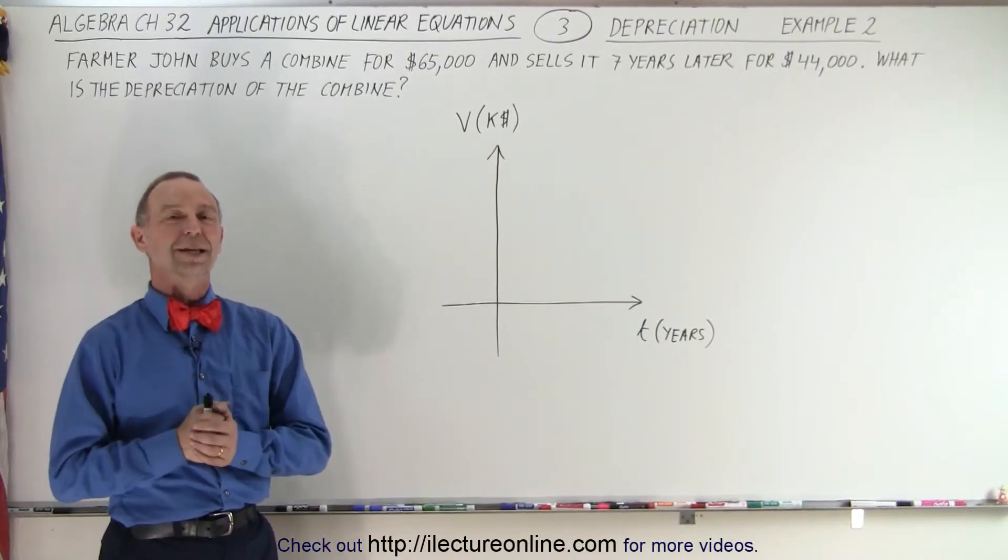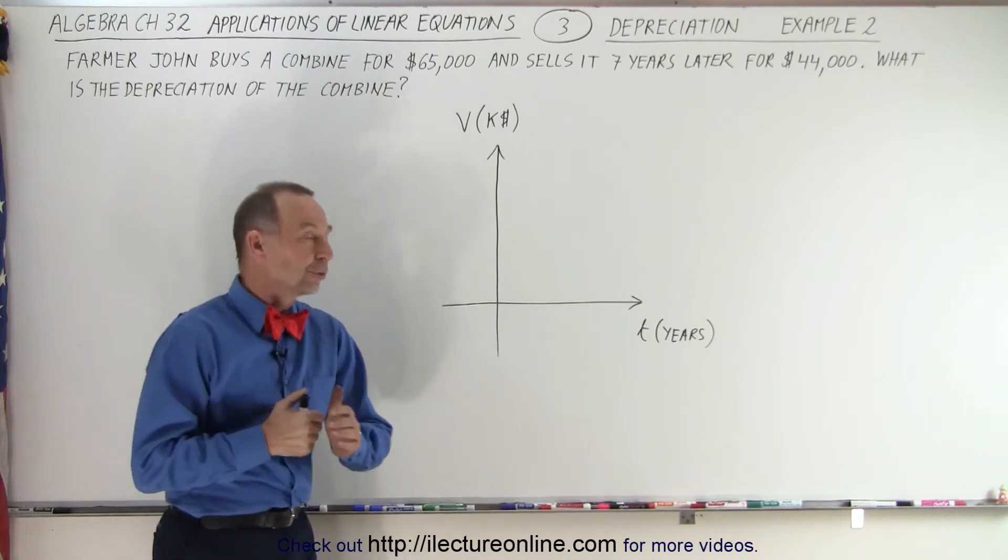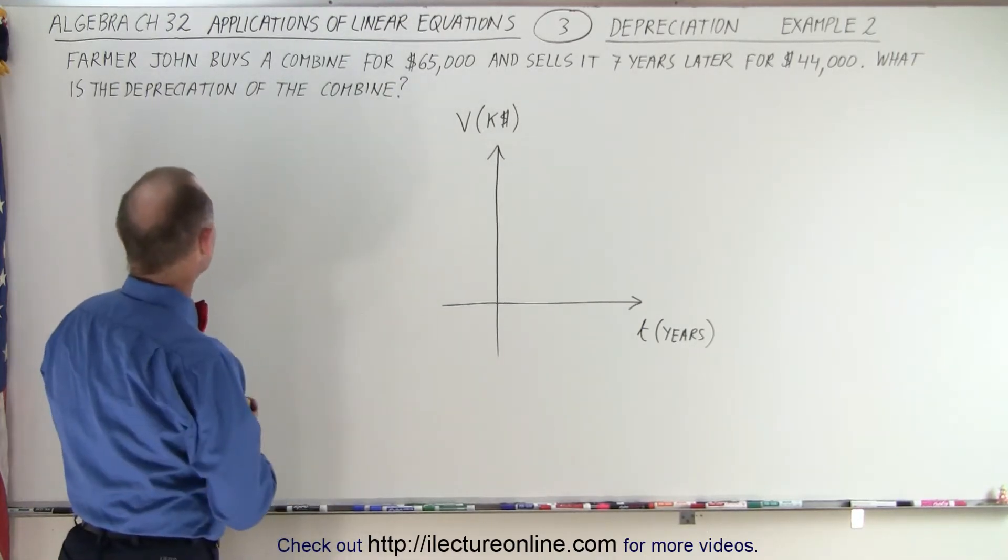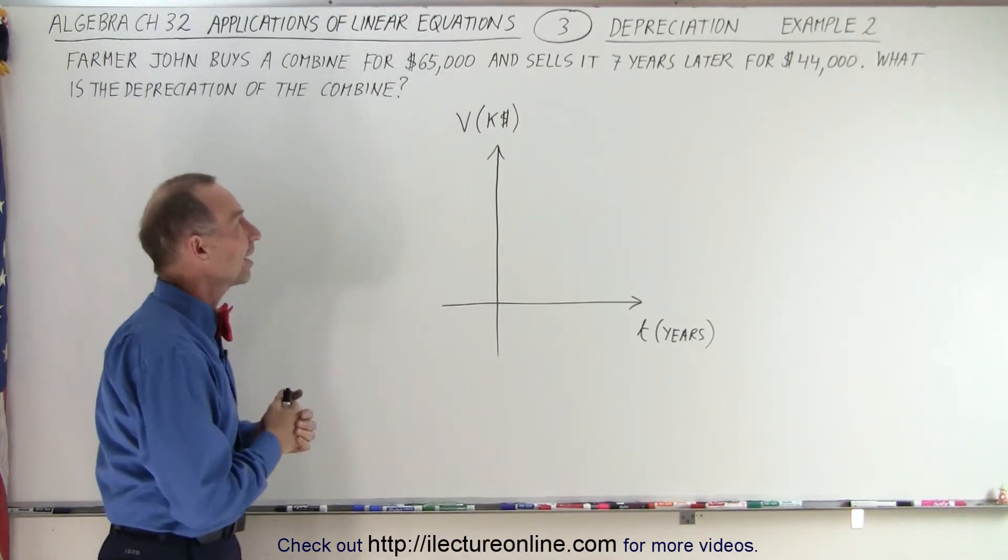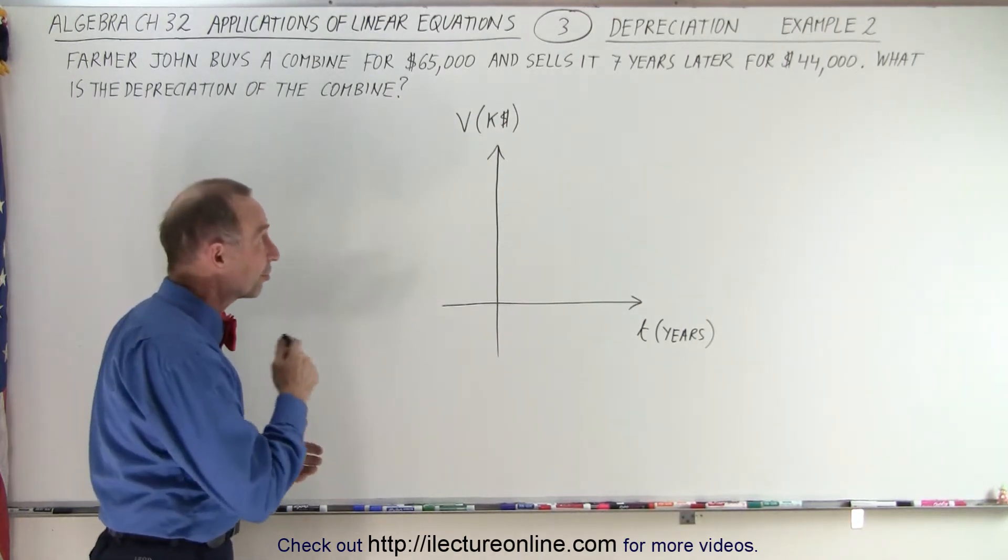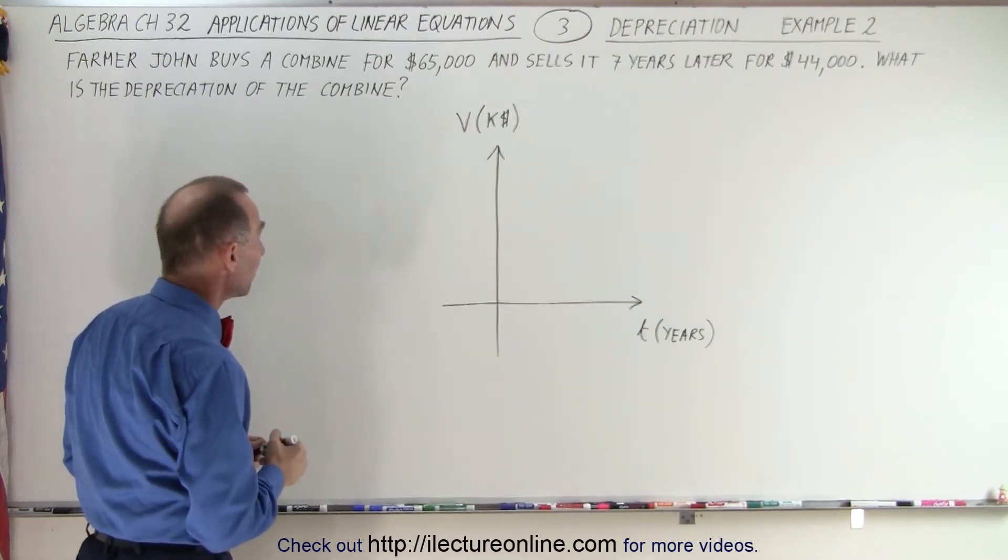Welcome to ElectronLine. In our next example dealing with depreciation, we're going to go to Farmer John's farm. Farmer John buys a combine for $65,000 and sells it seven years later for $44,000. What is the depreciation of the combine?